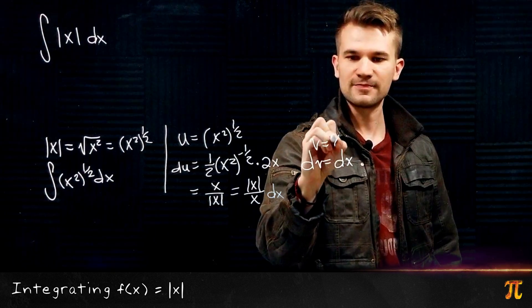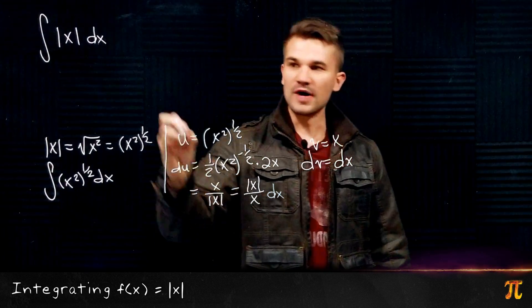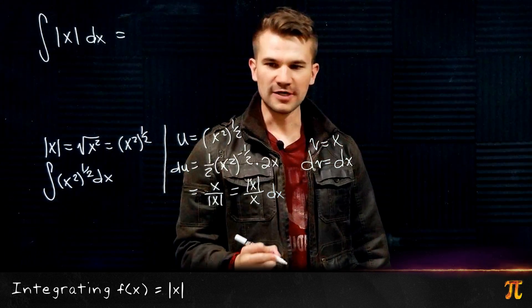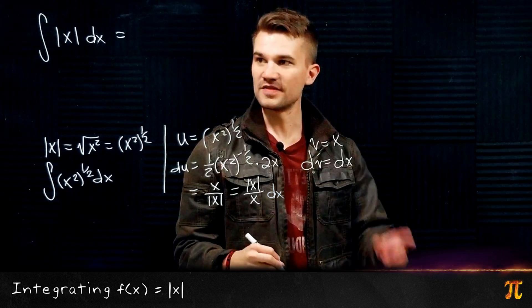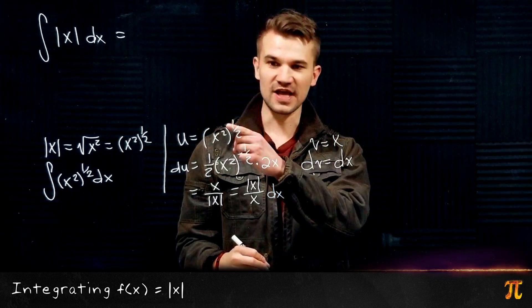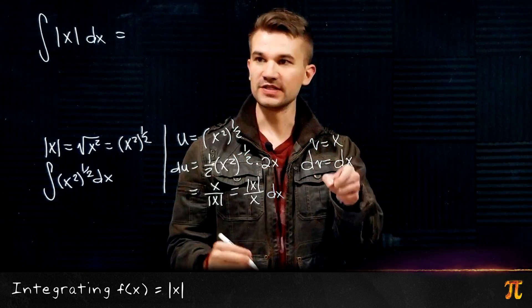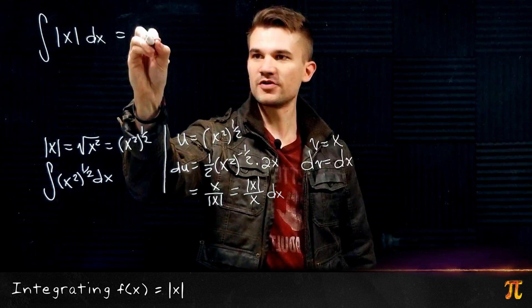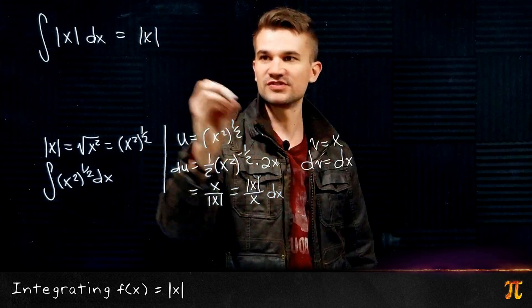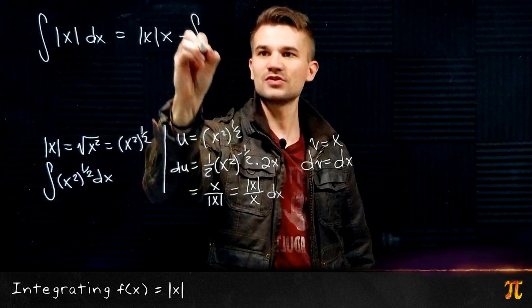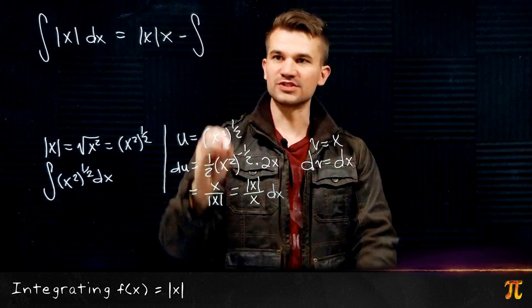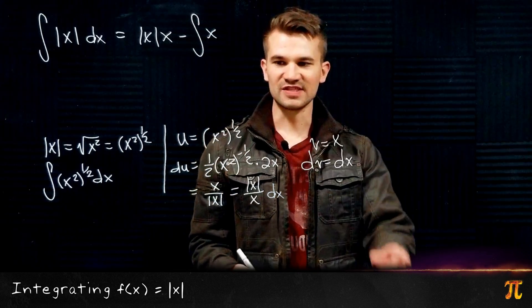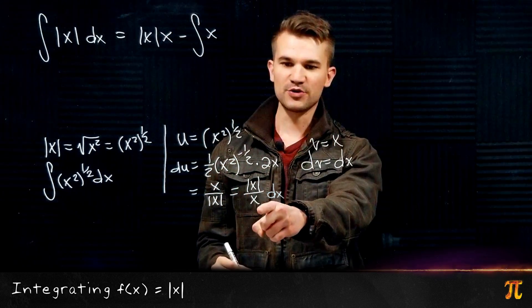All right, now by the integration by parts formula, we have that the integral of this is uv minus the integral of v du. So this is |x| (remember) times v which is x, minus the integral of v (which is x) times du (which is |x|/x).